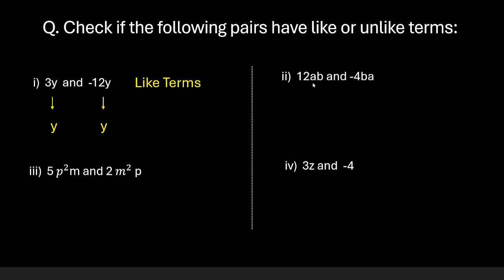Let us look at the second part. In this case, we have two variables a and b and here we have two variables b and a. We know that the order of multiplication does not matter. So we have same variables with same powers. So this is also case of like terms.